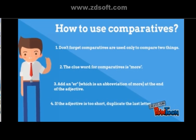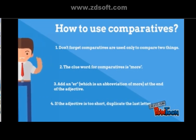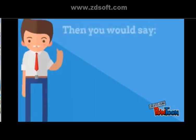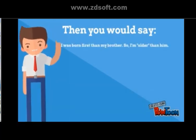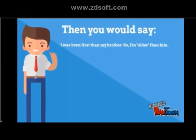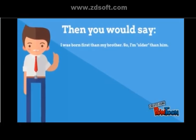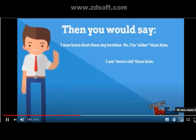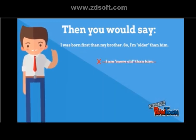If the adjective is too short, just duplicate the last letter. Then you would say something like: 'I was born first, so I am older than my brother.' What you cannot say is 'I am more old than him.' This is not correct — it's like mixing the word 'more' with the '-er' adjective form.